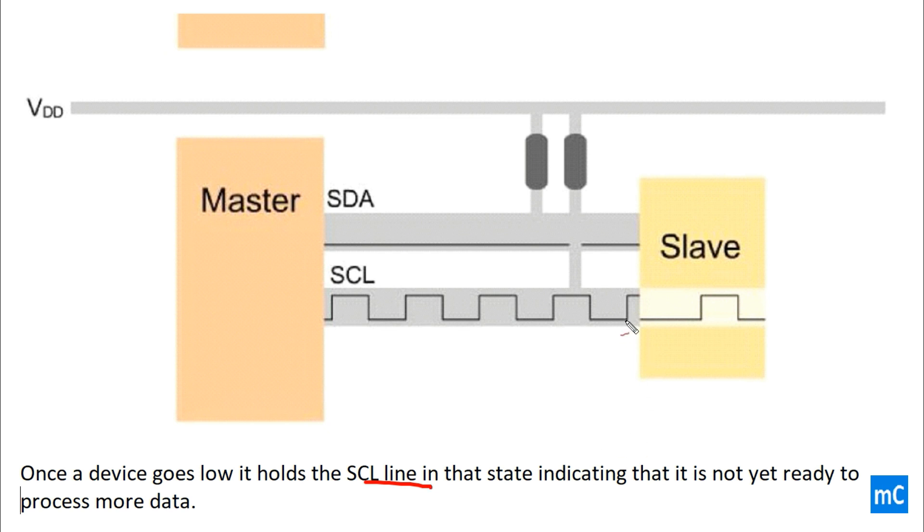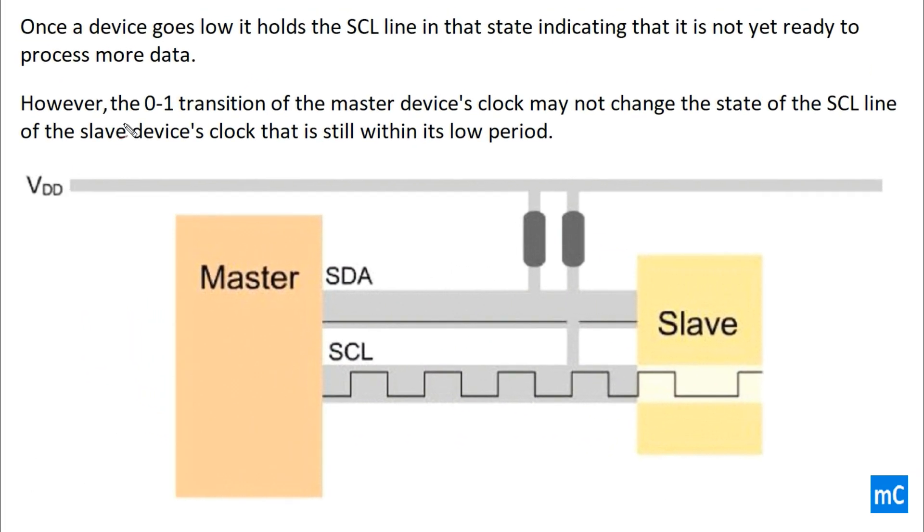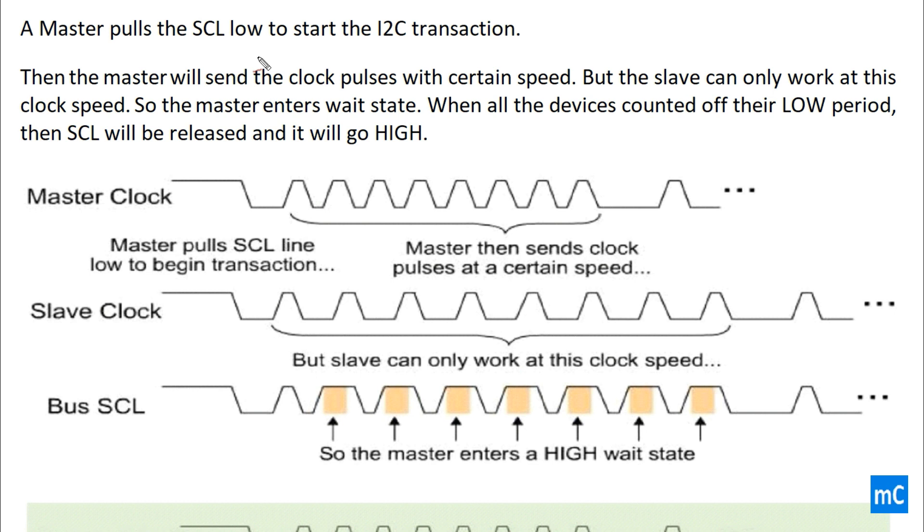Here you can see the difference. However, the 0 to 1 transition of the master device clock may not change the state of the SCL line of the slave device clock that is still within its low period. We can understand it clearly with the help of the timing diagram.